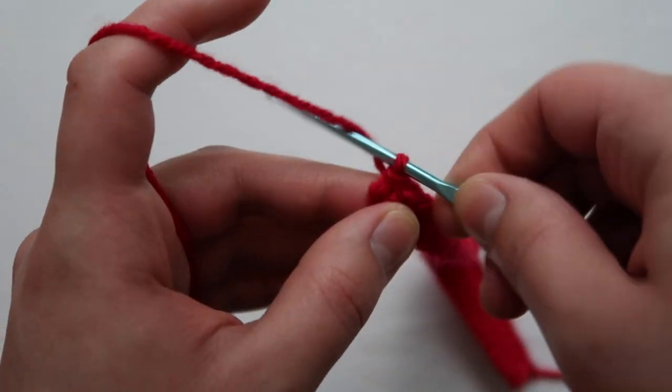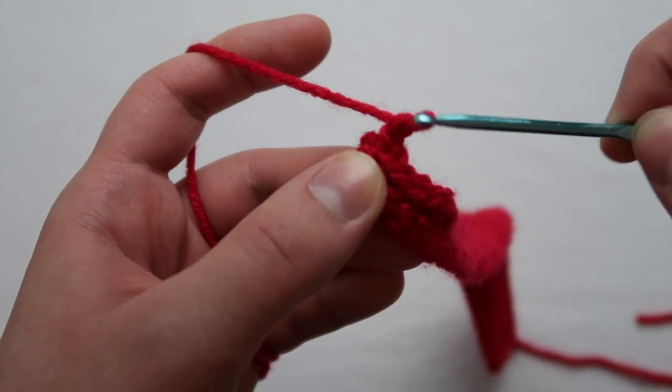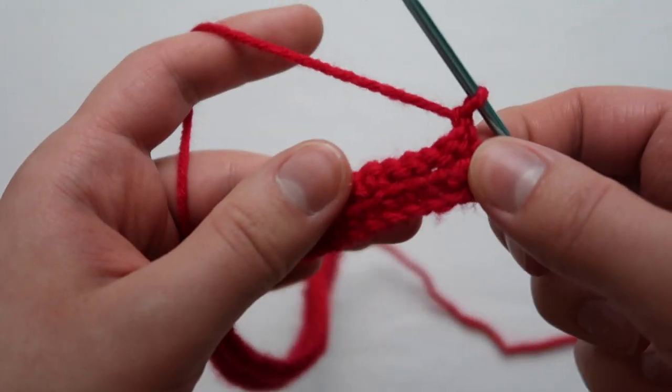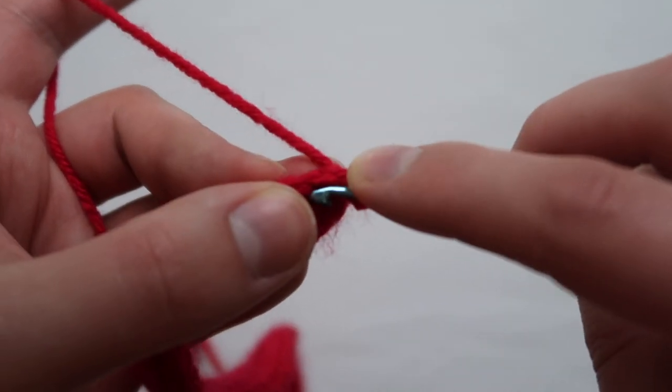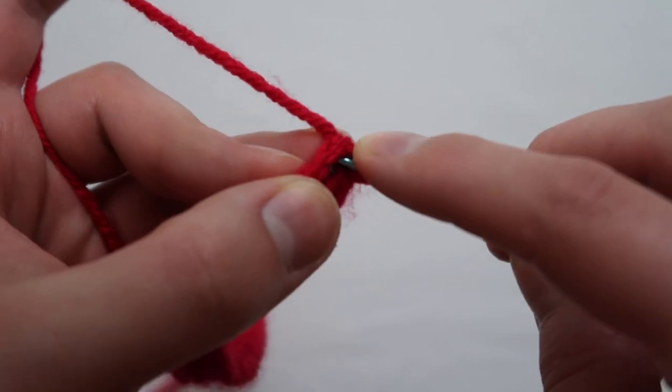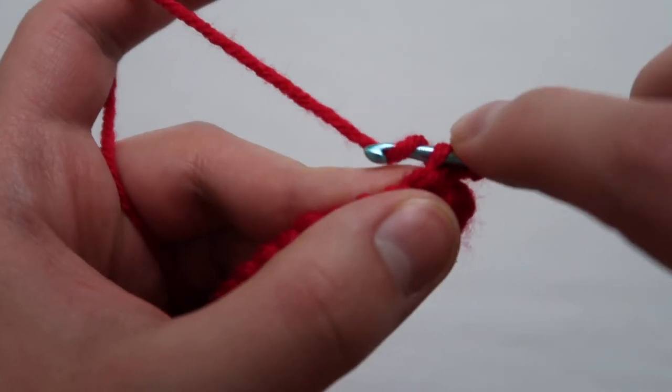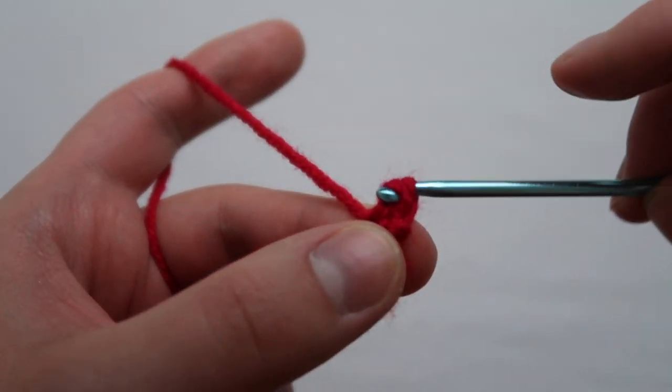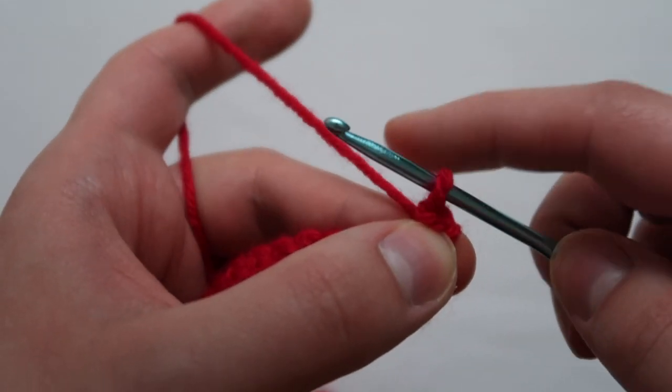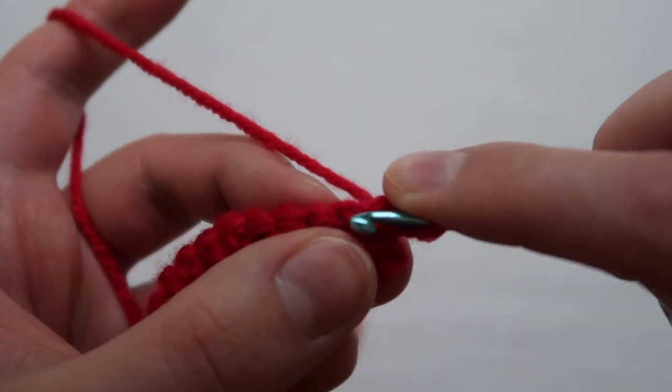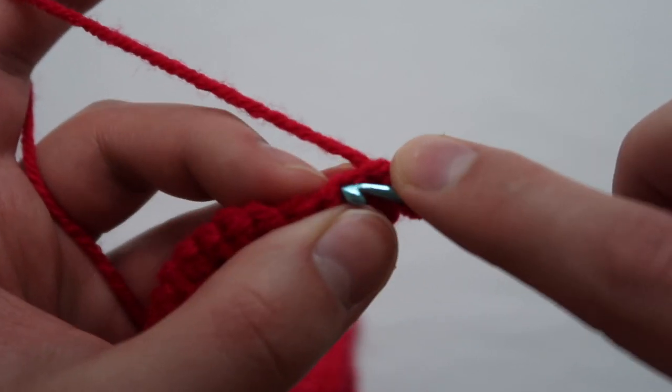Remember on this side you're going to chain up once and then turn around. You're going to do all the things that you just did again. First you're going to do five slip stitches, five single crochet, five half double crochet, and then the number of double crochet that you have for your head size.